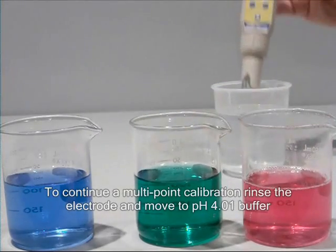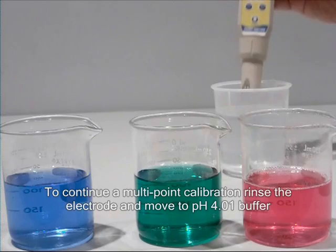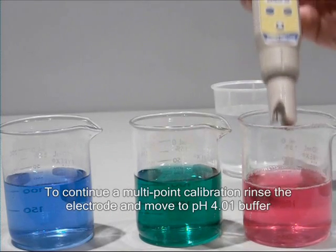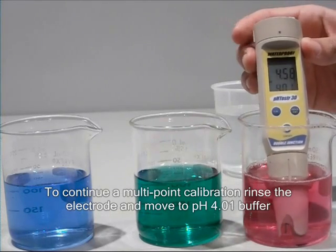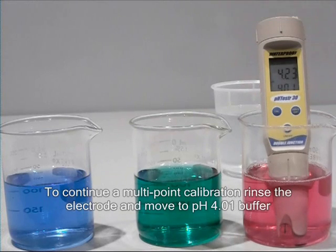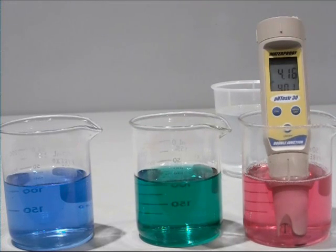Rinse the electrode, then place in pH 4 buffer solution. Wait for the reading to stabilize, then press the HOLD ENTER key to confirm the second calibration point.